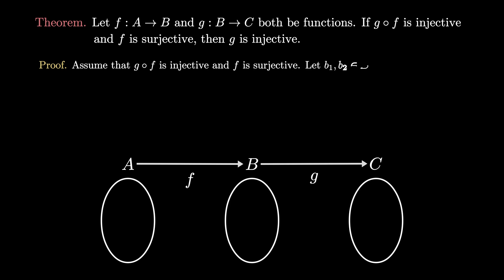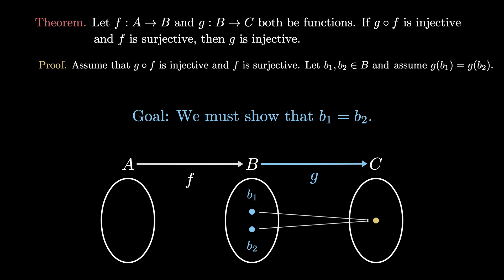we start with two arbitrary elements b₁ and b₂ in the set B, and assume that they map to the same element of C, so that g(b₁) = g(b₂). At this point, according to the definition of an injective function, if we can show that b₁ = b₂, that is that they're the same element of the set B, then we will have proved that g is injective.